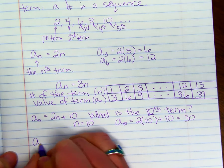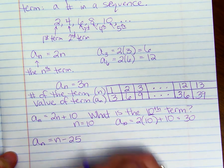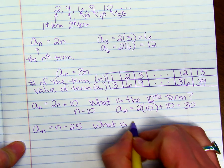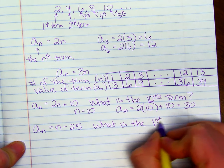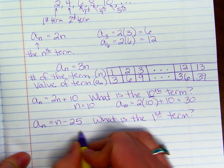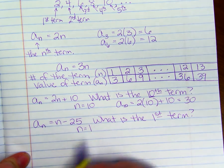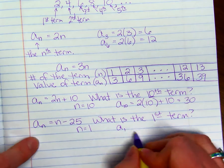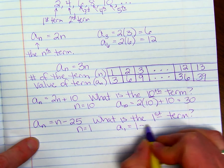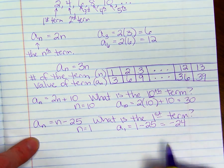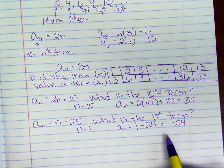Here's another example. A sub n equals n minus 25. What's the first term? To find the first term, we're going to plug in 1 for n. So a sub 1, the first term, equals 1 minus 25, which equals negative 24. So this sequence is going to start in the negatives.